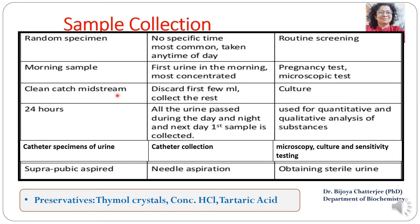The third type is the clean catch midstream sample, in which the first few ml of urine are discarded and the remaining volume is collected for analysis. This sample is used for culture testing and culture sensitivity. The 24-hour sample is another method where the entire volume of urine for 24 hours is collected in one container after adding a suitable preservative, used for quantitative and qualitative analysis of various substances in urine, also giving an assessment of renal function. The fifth type is catheter collection, where urine is collected directly from the catheter in bedridden patients or ICU patients, sent for microscopy and culture sensitivity testing.